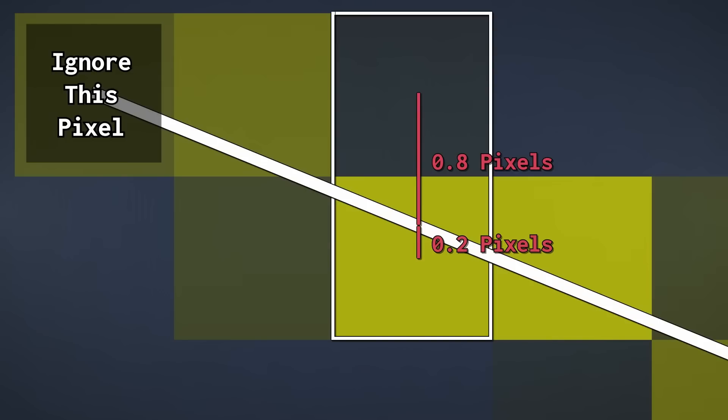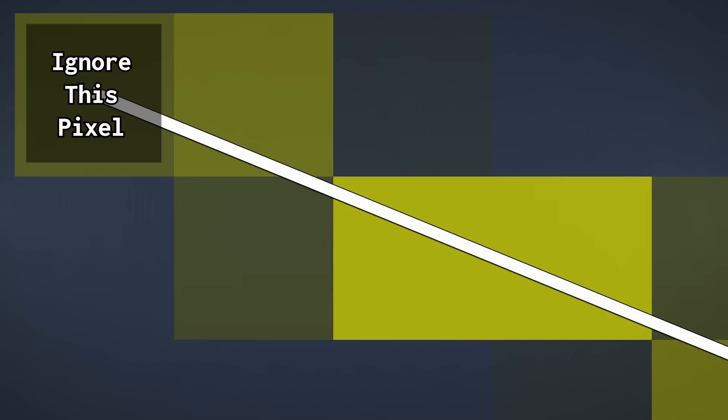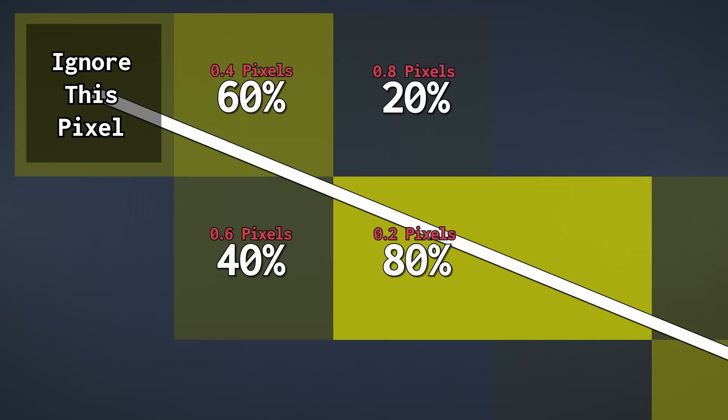Now let's examine the exact opacity of each pixel. As you can see, the opacity is always 1 minus the distance. Here on the first pixel, we have a distance of 0.4. 1 minus 0.4 is 0.6,